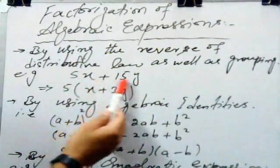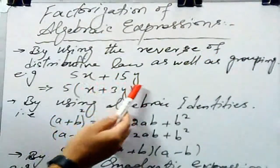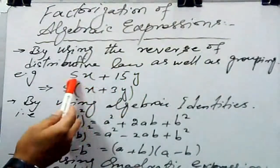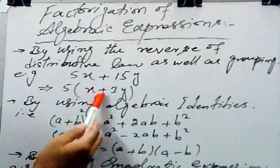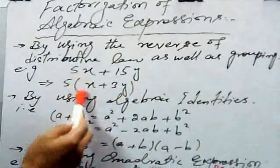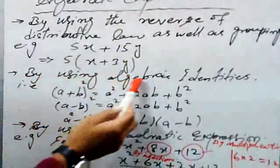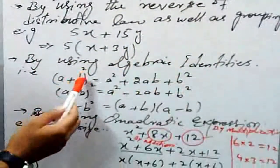an algebraic equation like 5x + 15y, you can take the common factor 5, so you will get 5(x + 3y). So you have made a group. Second, by using algebraic identities, we